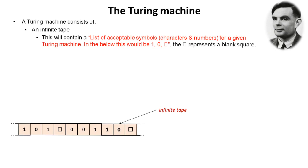The Turing machine consists of an infinite tape and this will contain a list of acceptable symbols which can be characters and numbers for a given Turing machine. In the example below this would be 1, 0 and the square where the square represents a blank.